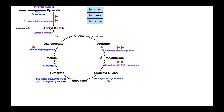Fumarate is converted to malate by the action of fumarase — this reaction also uses water. Fumarate, like succinate, is four carbons, and malate is also four carbons. Then malate is converted to oxaloacetate by malate dehydrogenase. This is an oxidative enzyme and it produces an NADH. This oxaloacetate can then be converted back to citrate by combining with another acetyl-CoA molecule — remember oxaloacetate is four carbons and the acetyl component is two, so two plus four gives us back our six-carbon citrate.